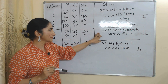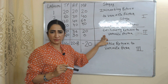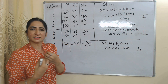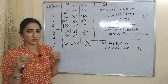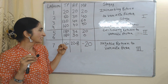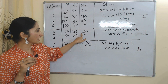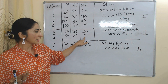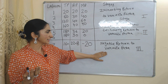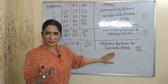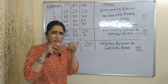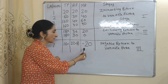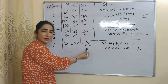The second stage is called decreasing return to variable factor. Now the marginal product of labor starts reducing because of over-utilization of our fixed factor land. Marginal product reduces and eventually becomes equal to zero. The last stage is called negative return to variable factor. Here, too much over-utilization of land causes our marginal product to become negative.